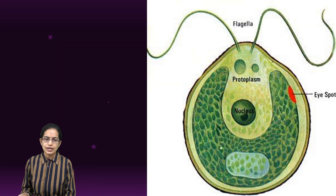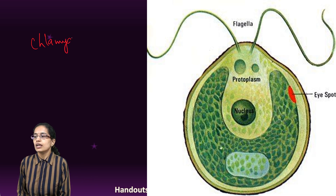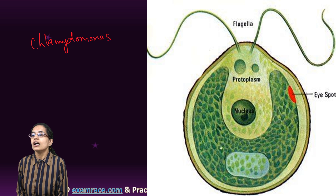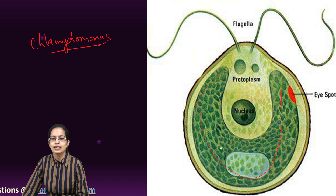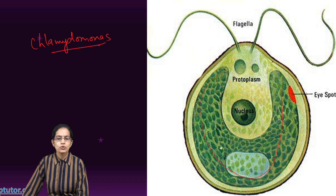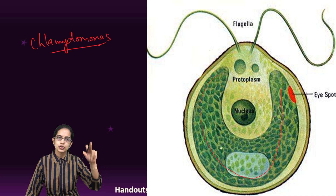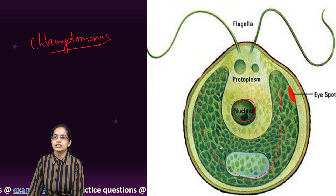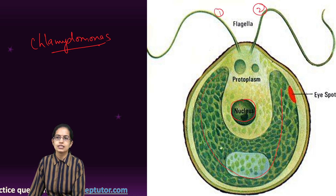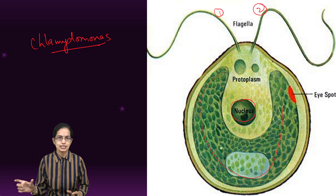The next is chlamydomonas. Chlamydomonas is important because it has a cup-shaped chloroplast. It also has an eye spot which is photosensitive, meaning it is autotrophic and can manufacture its own food. The nucleus is present within the cup-shaped chloroplast. Another interesting feature is that there are two flagella present, which are meant for movement.